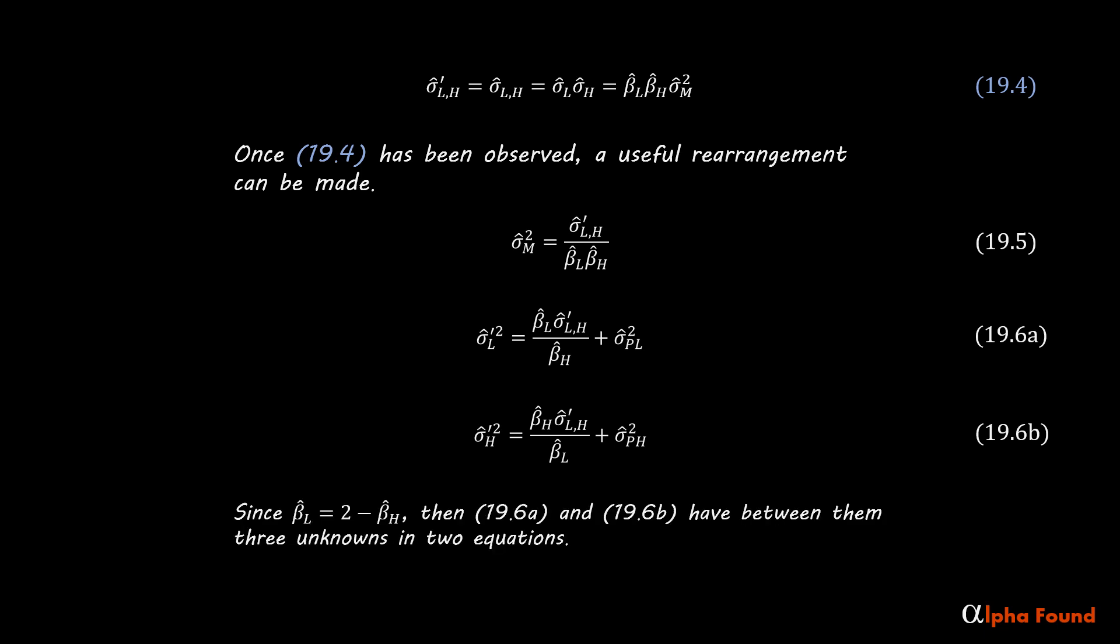Since the estimate of the low ideal beta equals two minus the estimate of the high ideal beta, then equations 19.6a and 19.6b have between them three unknowns in two equations. There is not enough information to get an exact estimate of the ideal volatility parameters from the volatility statistics alone.